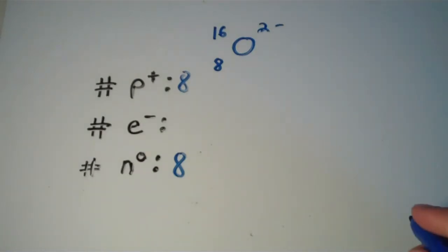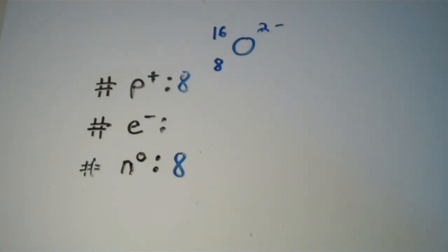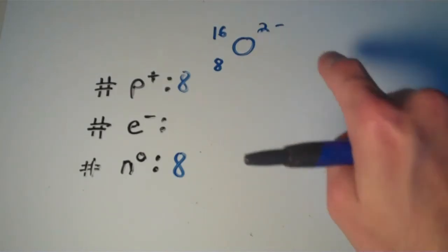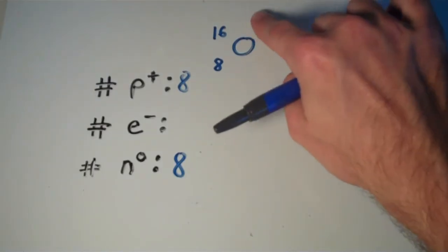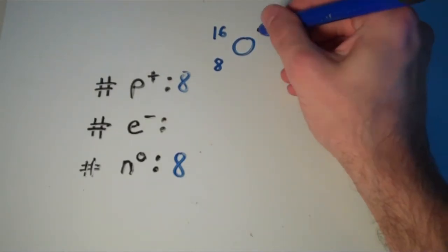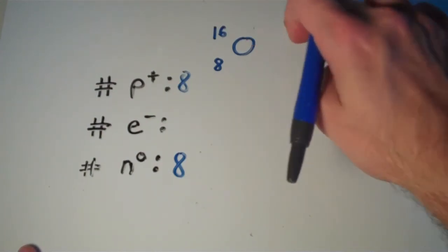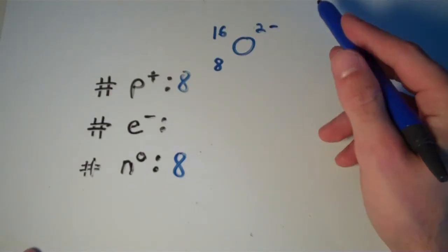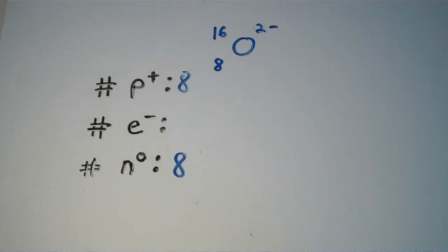If this was neutral, the number of electrons would be 8. But, this actually has a charge of 2 minus. By the way, just a quick note. This says 2 minus, an equivalent way of writing this would be minus 2, or even minus minus. But, I think the more common way that you'll see it written is like this, 2 minus. Why the minus sign comes after the 2, I have no idea. But, all it's saying is that it has a minus 2 charge.